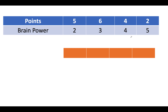We have the input array as: [5,2], [6,3], [4,4], [2,5]. If we consume the first question, the next two future questions get blocked, and the points corresponding to this question are 5.